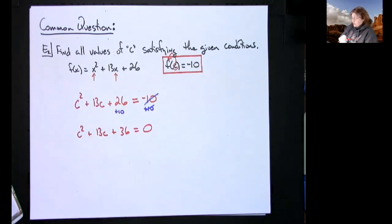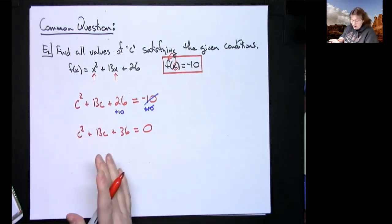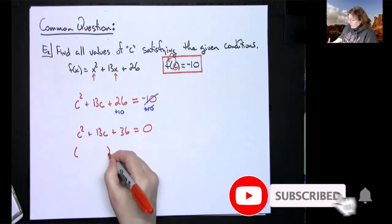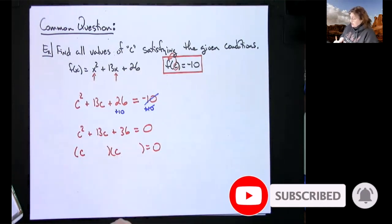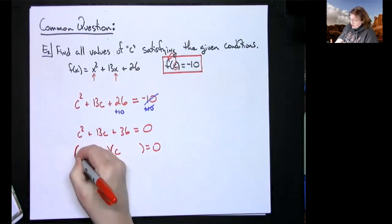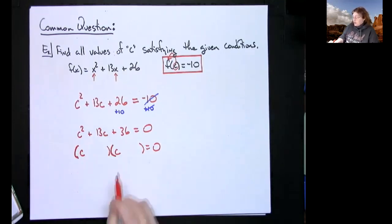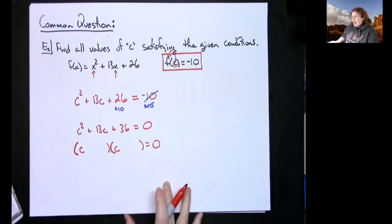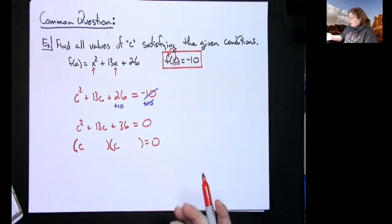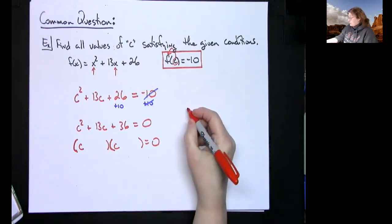I'm pretty sure we did this last Wednesday - it's factoring trinomials, guessing check, leading coefficient to one, so it's relatively simple. We know we're going to have two binomials. We'll have c in the first term and c in the second term.